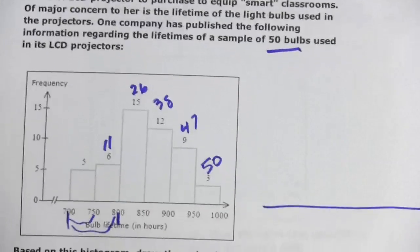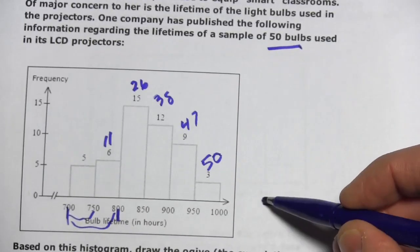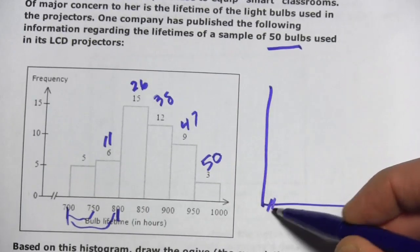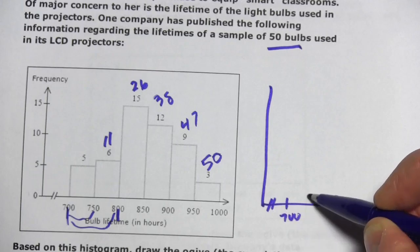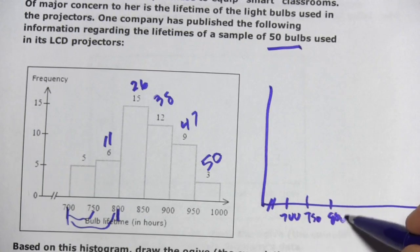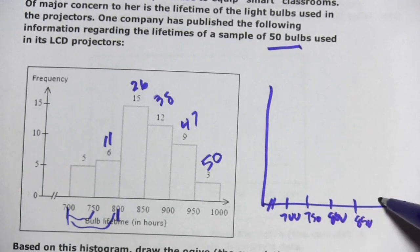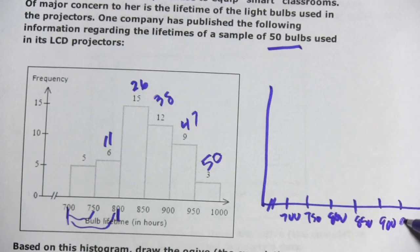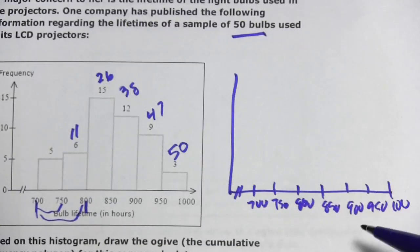I'm going to just do that over here, and we'll have 700, and 750, and 800, and 850, and 900, 950, and 1000. There's my bottom axis.